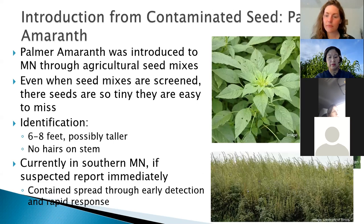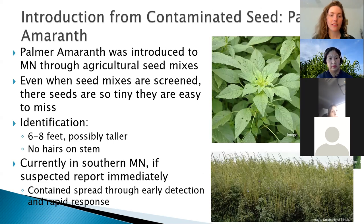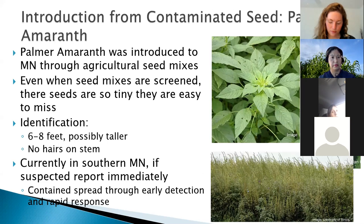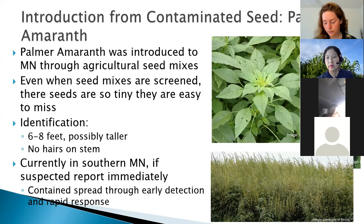Palmer Amaranth was actually introduced into Minnesota through agricultural seed mixes from Iowa. Those seed mixes were screened, but these seeds are super tiny and were still able to make it through the screening initially. Now we do genetic testing to see if there's any DNA found in those seed mixes before they come up. Right now they're mostly found in Southern Minnesota and we're trying to prevent it from moving north. It's really important to check your seed sources to make sure you know what you're getting.